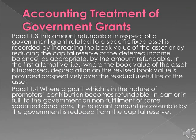Para 11.3: The amount refundable in respect of a government grant related to a specific fixed asset is recorded by increasing the book value of the asset or by reducing the capital reserve or the deferred income balance, as appropriate, by the amount refundable. In the first alternative — where the book value of the asset is increased — depreciation on the revised book value is provided prospectively over the residual useful life of the asset. Para 11.4: Where a grant which is in the nature of promoters' contribution becomes refundable in part or in full to the government on non-fulfillment of some specified conditions, the relevant amount recoverable by the government is reduced from the capital reserve.